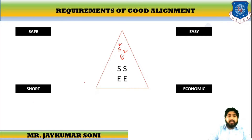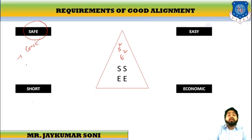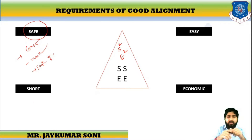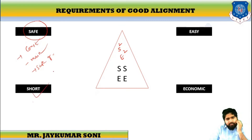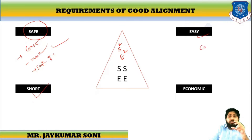Safe means whenever alignment is constructed, it should be safe in construction and maintenance, and it should have safe geometric features. The sight distance should be safe, and widening of the pavement should be provided for safety of pedestrians, vehicle movers, and laborers. Easy means it should be easy to construct, easy to maintain, and have minimum problems.